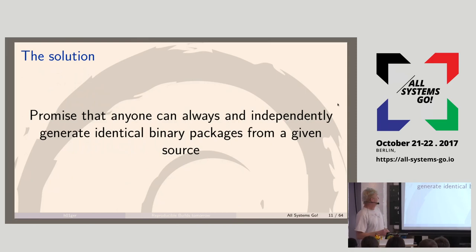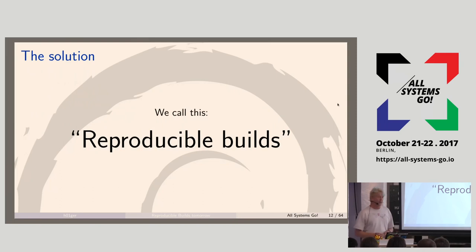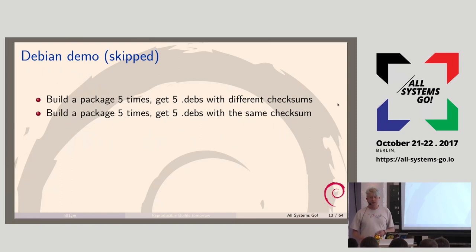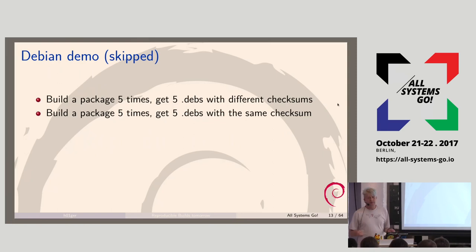Our solution is that anyone can always independently generate bit-by-bit identical binaries from a given source. That is what reproducible builds is about — this bit-by-bit identical result. We used to have a demo where we'd build a Debian package five times, and a year ago you'd get five different checksums. If you build it now, you get five times the same checksum. We include everything the build produces — documentation, data files — all should be reproducible. Everything matters. Everything should be identical.